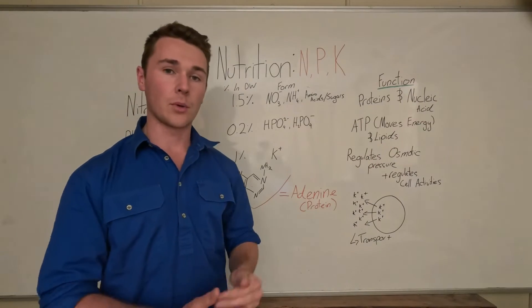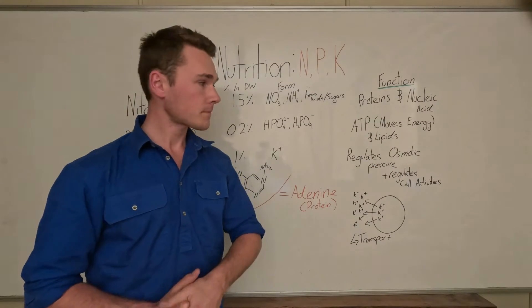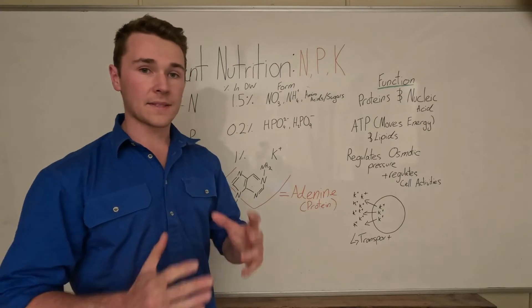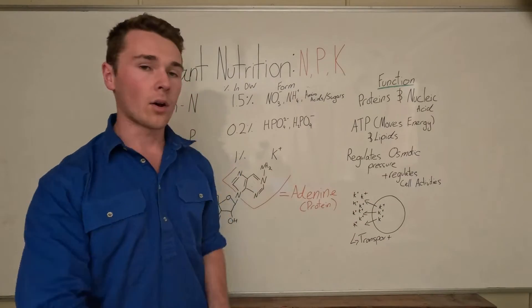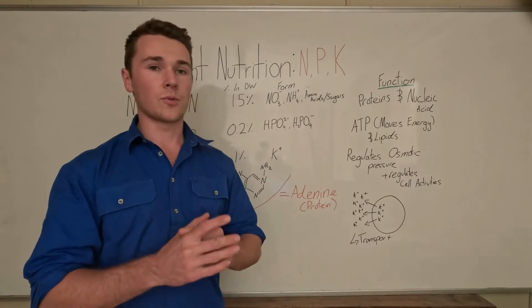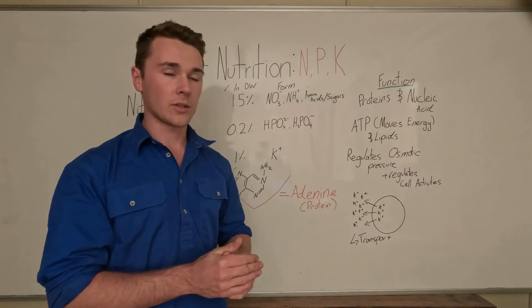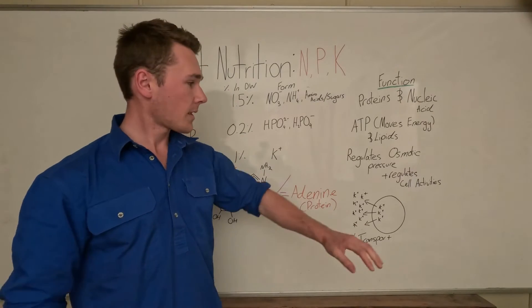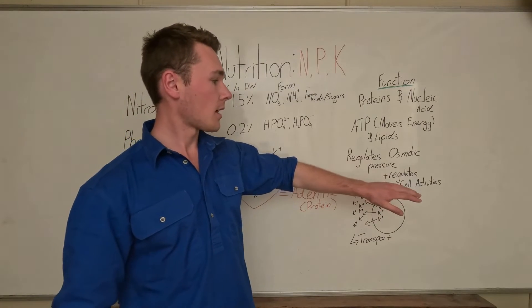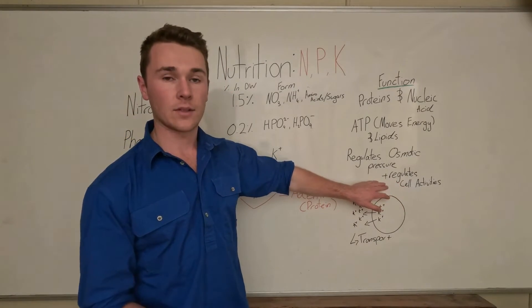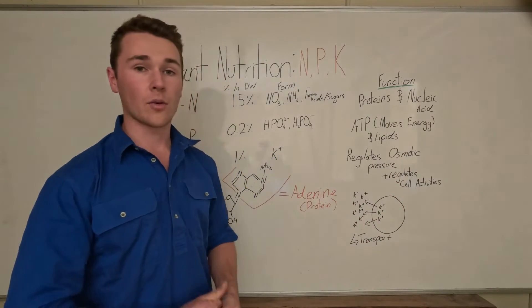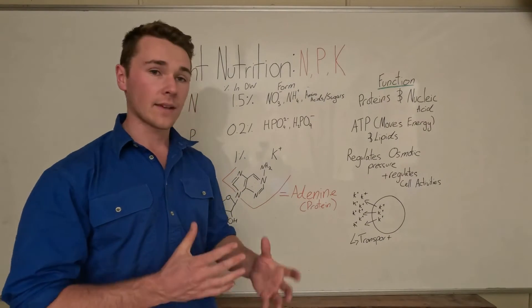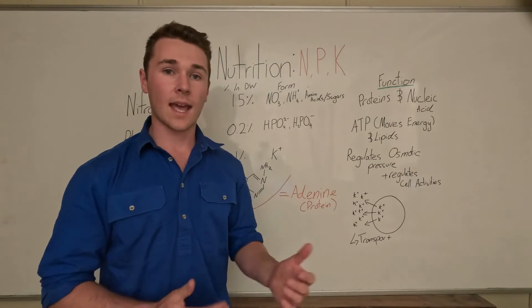Phosphorus also has an important function in the building of lipids. Then potassium is a massive regulator of osmotic pressures, which is really important when we want to have a nice turgid plant. It also has a really important function in regulating plant activities like photosynthesis or even rubisco, which is an enzyme. There's a bunch of other enzymes that it activates too.